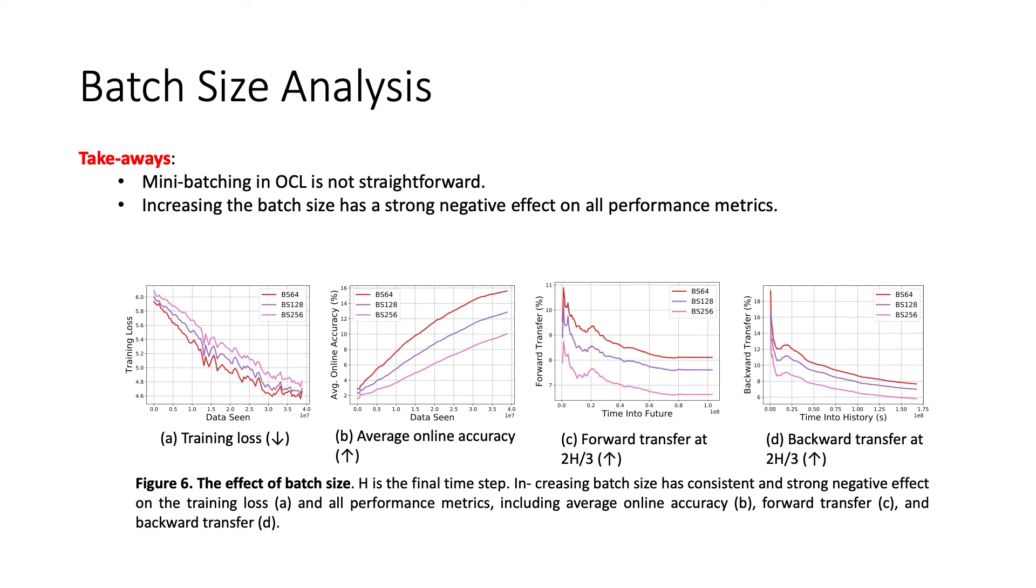In terms of batch sizes, by comparing models trained with different batch sizes, we observed that increasing the batch size, even by a small factor, for example from 64 to 256, has a strong negative effect on online continual learning. This suggests that the smallest possible batch size should be used.